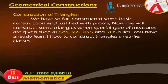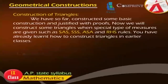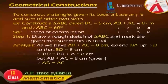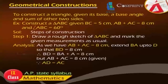Constructions of Triangles: We have so far constructed some basic constructions and justified with proofs. Now we will construct some triangles when special measures are given such as SAS, SSS, ASA and RHS rules. To construct a triangle given its base, a base angle and the sum of the other two sides. Example: Construct a triangle ABC given BC is equal to 5 cm, AB plus AC is equal to 8 cm and angle ABC is equal to 60 degrees.